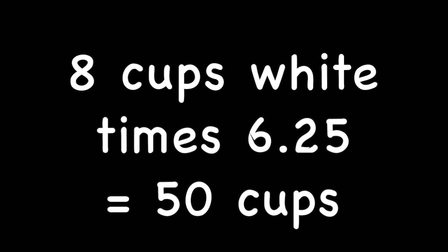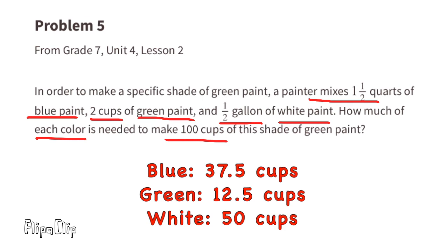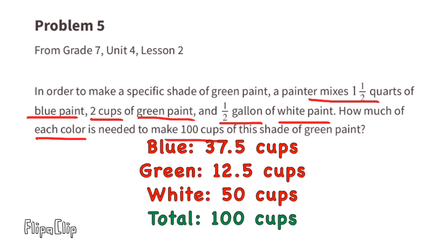Since 8 times 6.25 equals 50, the painter will need 50 cups of white paint. In summary, to make 100 cups of this shade of green paint, the painter needs 37.5 cups of blue, 12.5 cups of green, and 50 cups of white. Adding those up confirms they total 100 cups.